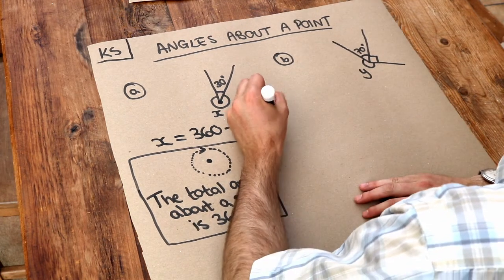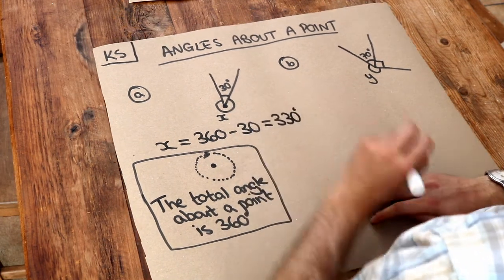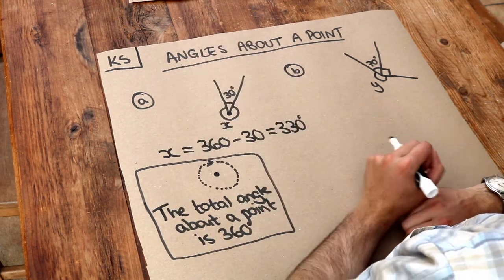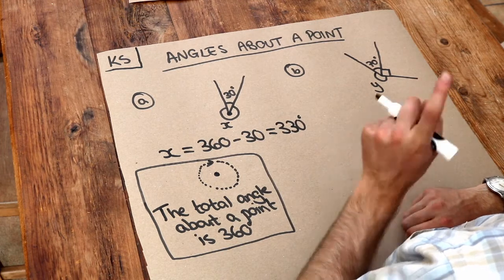360 minus 30 is 330 degrees. So if we did 30 plus 330, they do indeed add up to 360 degrees, which is a full spin.